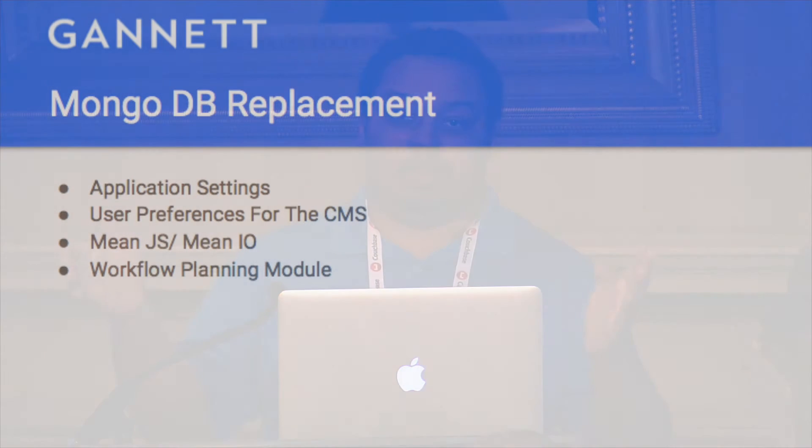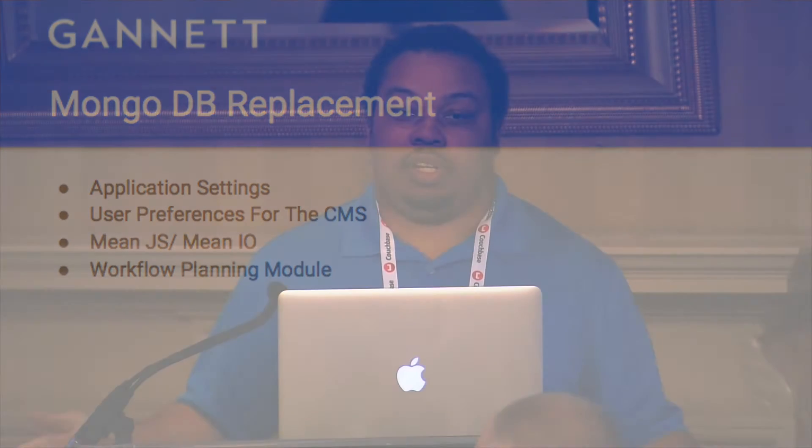The MEAN stack, for those who are not aware, is basically the combination of MongoDB, Express JS, Angular, and Node.js — this is what the acronym effectively stands for. When they introduced the MEAN stack, naturally everything they were doing was back-ended by Mongo, so they were pushing a lot of data for the application of what is called Presto itself into that space.